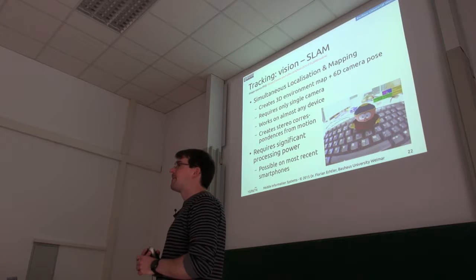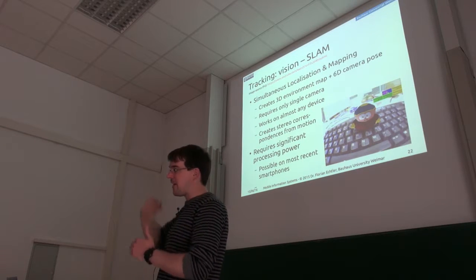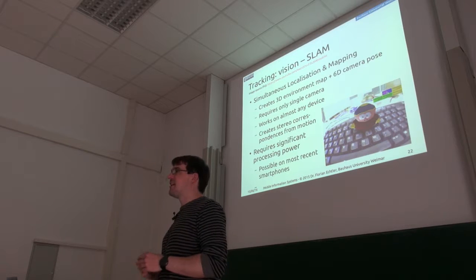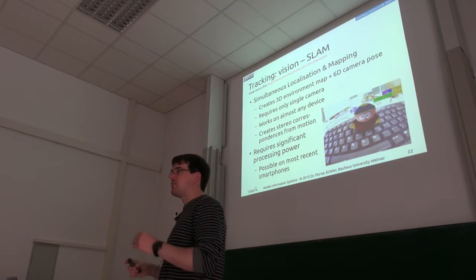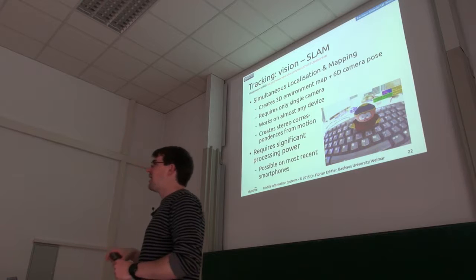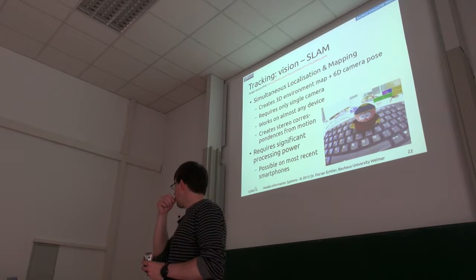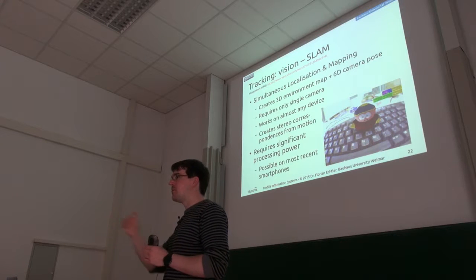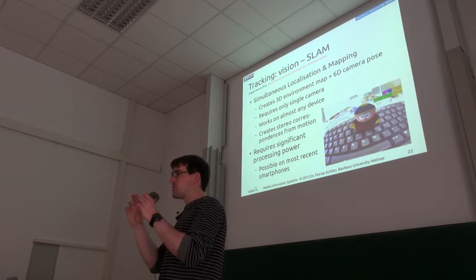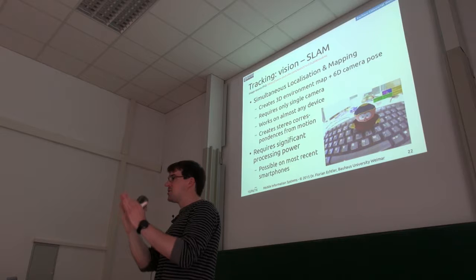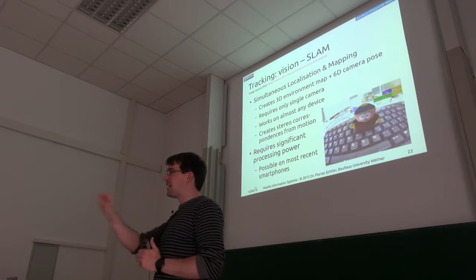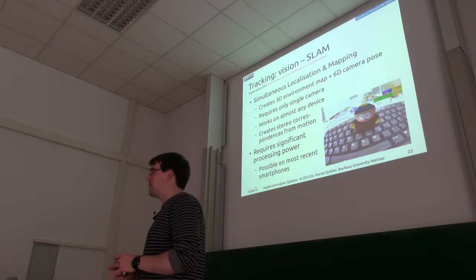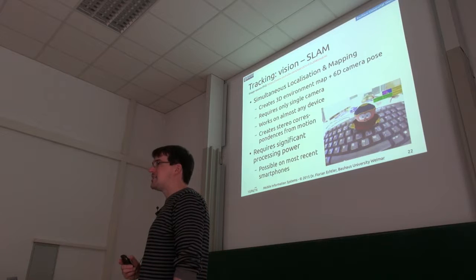The next step up from image tracking would be to use SLAM — Simultaneous Localization and Mapping. This means generating a map of the environment while at the same time localizing yourself within it. The stereo pairs used to determine 3D information are created through motion: moving sideways produces successive horizontally shifted images, and from correspondences between these images — for example using SIFT — you can calculate depth points.